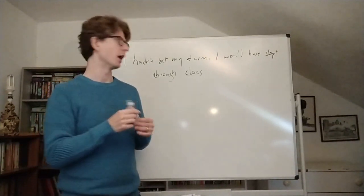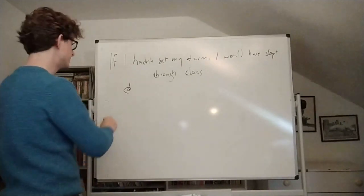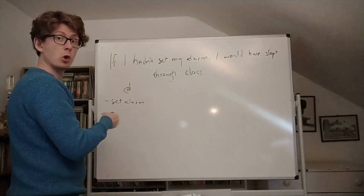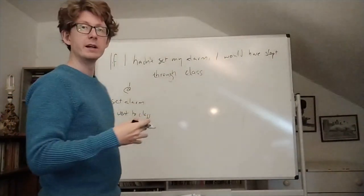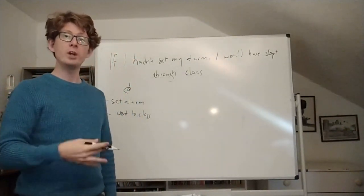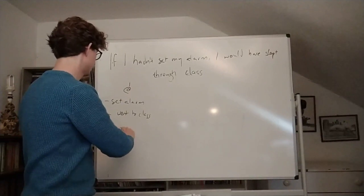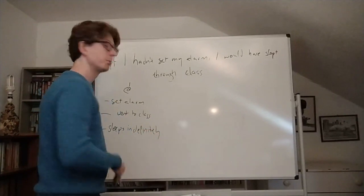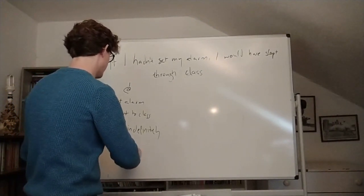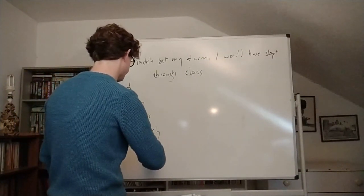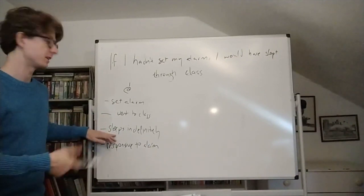So let's draw a picture with three different possible worlds. We'll start with what is actually true: as a matter of fact, I did set my alarm, it woke me up as usual, and I made it to class. We'll also be clear about some background facts: I'm the kind of person who will just sleep till noon unless I'm woken up — let's say 'sleeps indefinitely.' But we'll also suppose that I'm very responsive to my alarm, so maybe I have a very shrill alarm. Those are the actual facts.